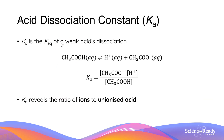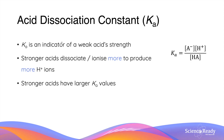The acid dissociation constant Ka is the equilibrium constant of a weak acid's dissociation. The expression Ka is simply the concentration of ions divided by the concentration of the acid at equilibrium. The value of Ka reveals the ratio of the ions to the unionized acid — that is, acid molecules that have not dissociated. One of the most important concepts to take away from this video is that Ka is an indicator of a weak acid's strength — that is, what proportion of the acid molecules are able to dissociate to produce hydrogen ions.